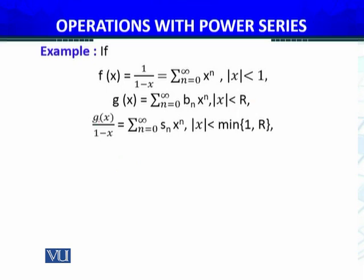Now b_n can be anything. So the product of f(x) and g(x) equals this series: summation n equals 0 to infinity s_n x raised to power n.